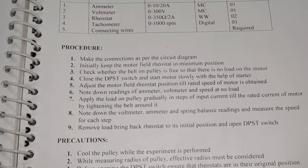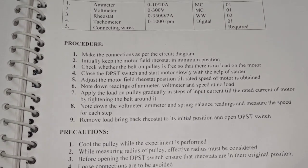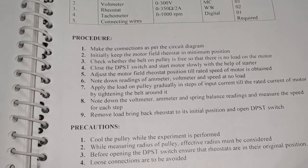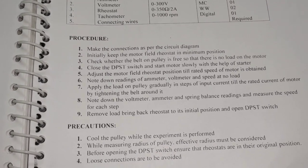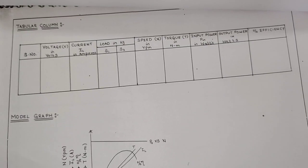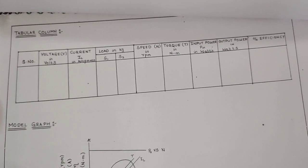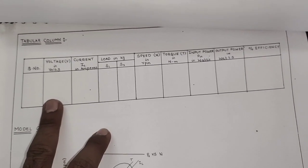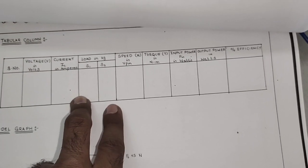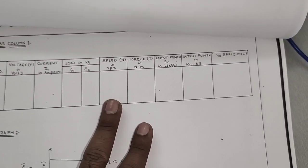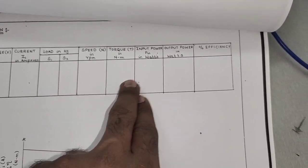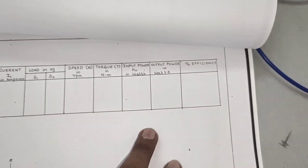After getting the rated current, remove the load and bring the field rheostat back to its initial position, then open the DPST switch. This is the tabular column where we note the values of voltage, current, spring balances S1 and S2, and speed measured with the tachometer. All calculated quantities are also recorded there.